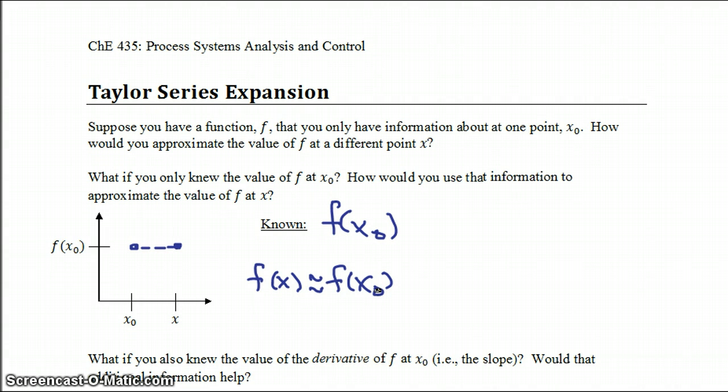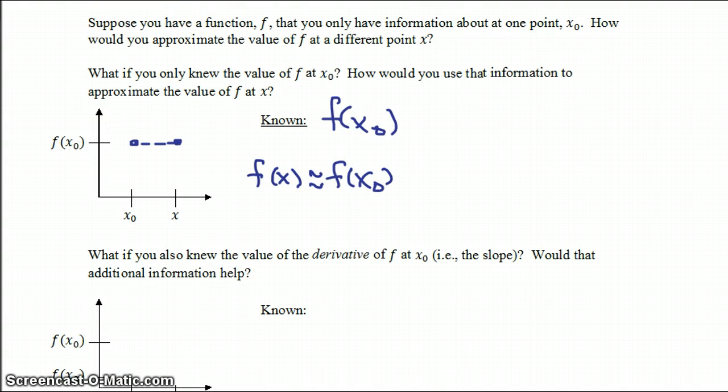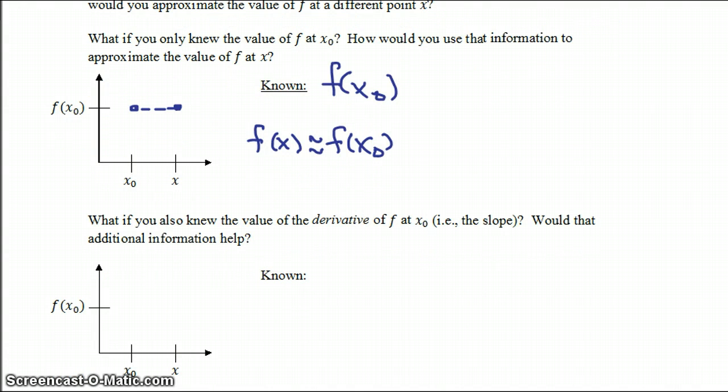What if we could use a little bit more information than just the value of f at x0? What if we also knew the value of the derivative of f at x0, that is, the slope? Would that additional information help? In this case, our knowns are f of x0 and f prime of x0. These are things that you might often encounter when you're calculating things computationally. We know our point, f of x0, and we also know what slope we're headed off in as we go towards x.